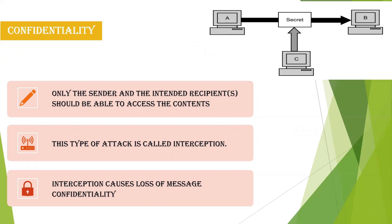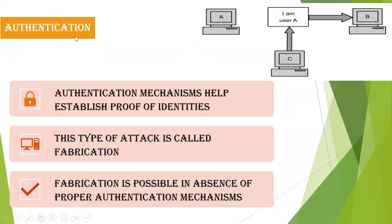Next is authentication. When maintaining confidentiality, there must also be authentication. After receiving the message, B should send an acknowledgment to A confirming receipt, or before sending, user A has to identify itself to B. Some type of authentication — like an OTP or a secret code — can be shared between users to maintain authentication.